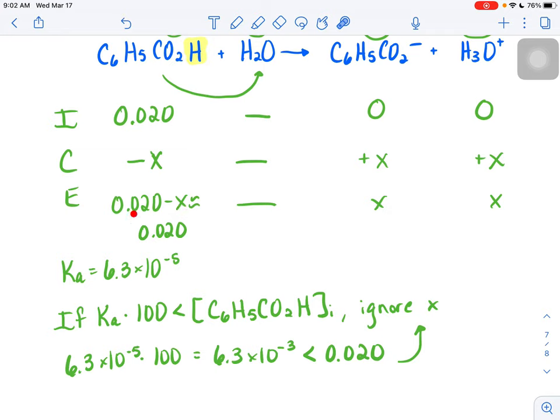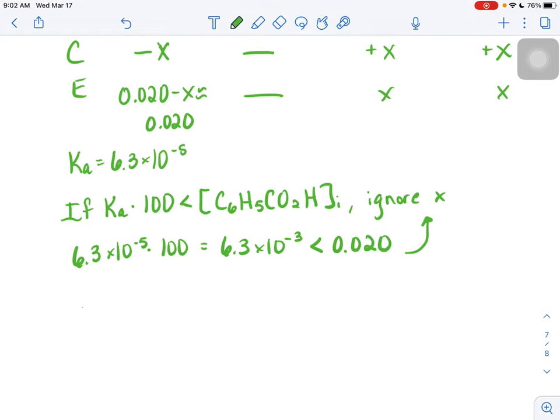So let's write our equilibrium expression for this reaction. We're going to do products over reactants, so our benzoate ion times our hydronium ion over our benzoic acid concentration.